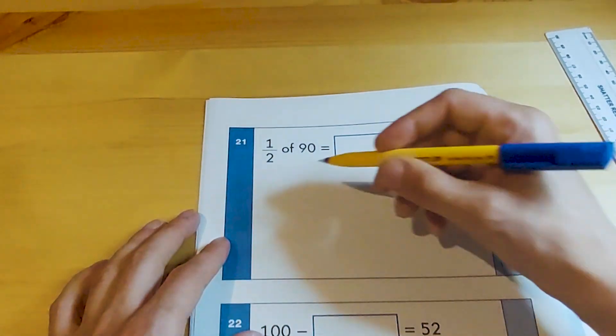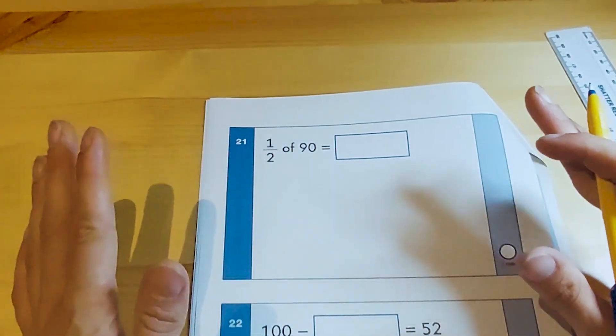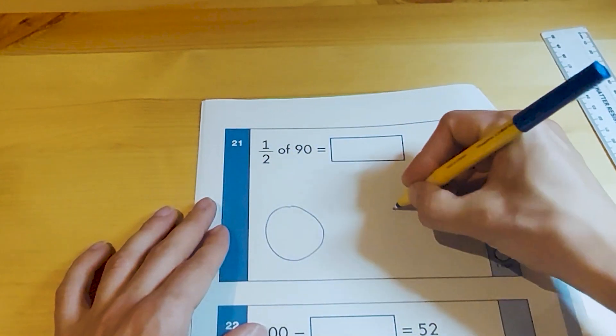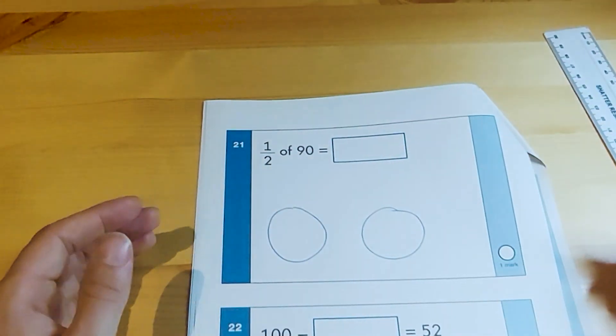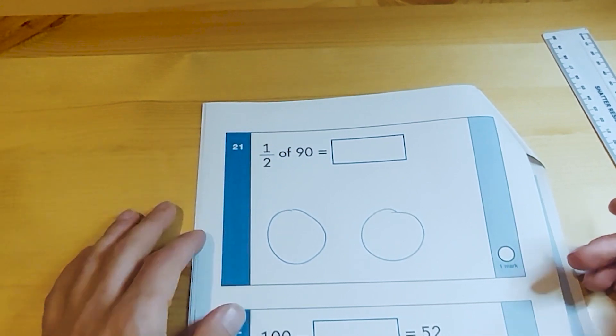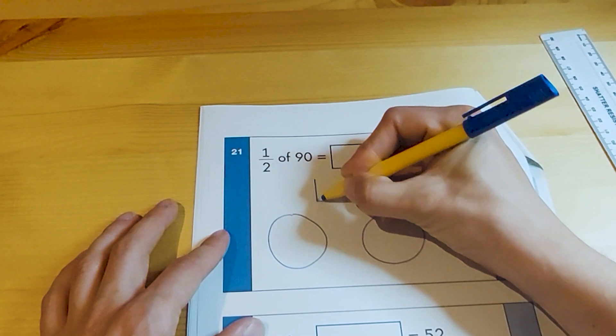Again we would say to the children: draw two groups because you want to share 90 into two groups. But as we know, it doesn't share out equally, so we would draw two groups. Then we would say to the children, well what's 90 made up of? It's made up of nine tens.